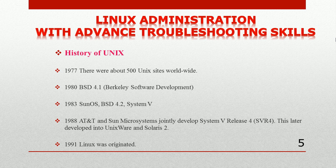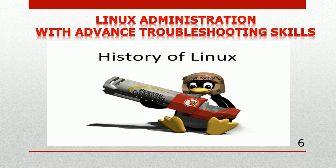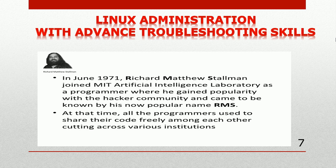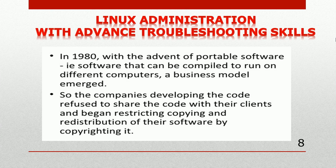This course is basically about Linux. The history of Linux begins with Richard Matthew Stallman, who joined MIT's Artificial Intelligence lab in 1971. He was well known for hacking and went by the initials RMS. At that time, programmers shared their code freely. However, by the 1980s, with the advancement of many companies, they refused to share code with clients and began restricting copying and redistribution of their software by copyrighting it.